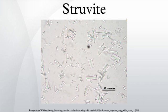Storvite was first described from medieval sewer systems in Hamburg, Germany in 1845 and named for geographer and geologist Heinrich Christian Gottfried von Straff. Storvite is occasionally found in canned seafood, where its appearance is that of small glass slivers, objectionable to consumers for aesthetic reasons but of no health consequence.